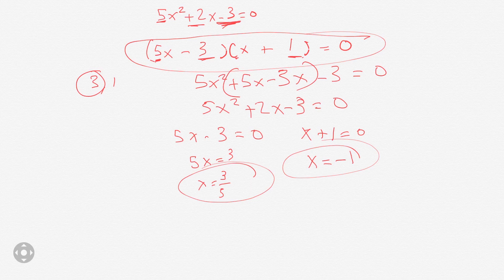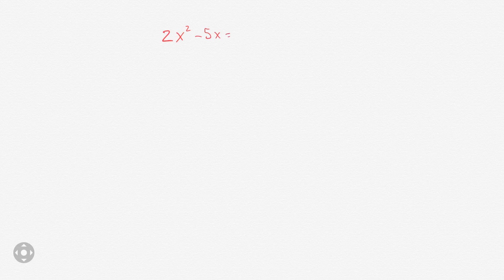The reason why we set each factor to 0 is because as long as one of those two entities equals 0, it doesn't matter what the other one is — because 0 times any number is 0.